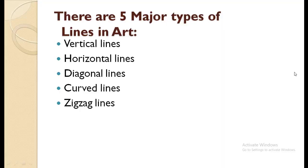Now, come to the next step. There are five beautiful types of lines in art. These lines depend upon their positions and shapes. First is vertical line. Second is horizontal line. Third is diagonal line. Fourth is curved line. Fifth is zigzag line.